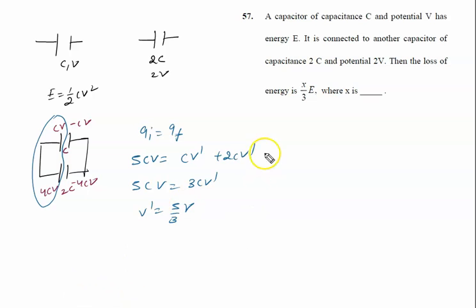Now, what is the initial energy of the system? Total initial energy of the system is given by, for this capacitor, half CV square plus for this capacitor half CV square means 4V square. So U initial is given by half CV square.